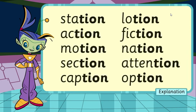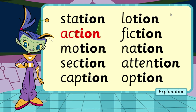There are three pairs of words that rhyme in the shun word box. Can you spot them? That's right! Station and nation rhyme. Lotion and motion rhyme. And action and caption rhyme. Well done!